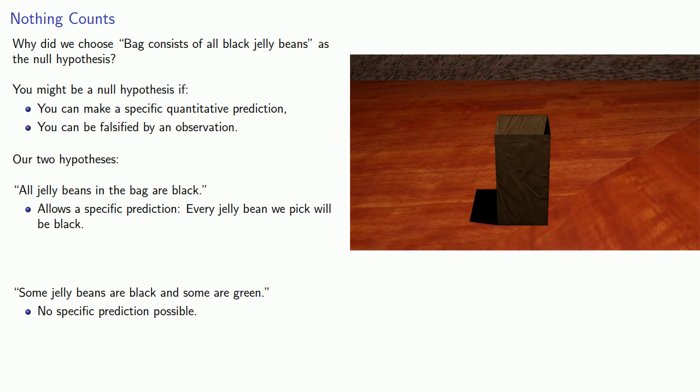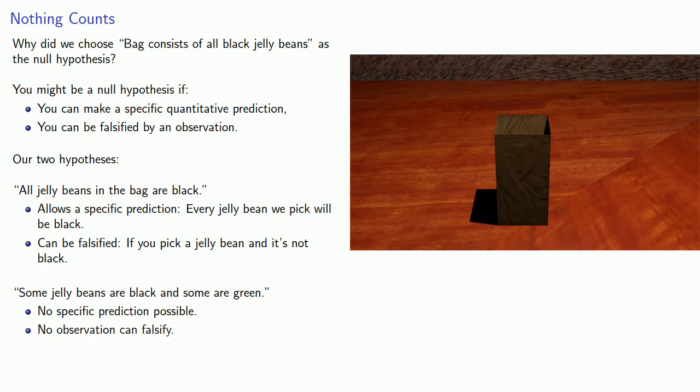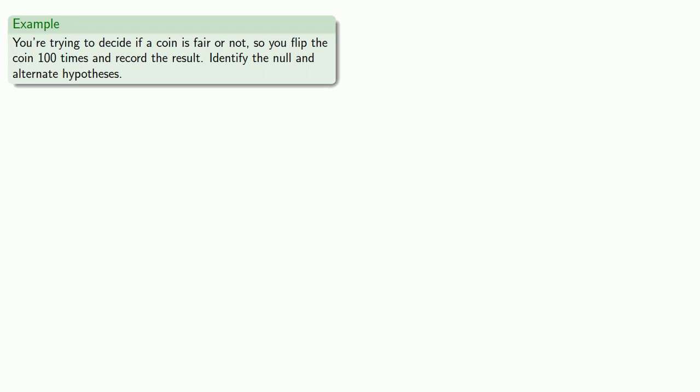The second important observation is that the hypothesis 'all jelly beans in the bag are black' can be falsified. If we pick out a jelly bean and it's not black, we know this is false. In contrast, the second hypothesis — some jelly beans are black and some are green — no observation can falsify it; the next jelly bean we pick could be green. So, for example, if you're trying to decide whether a coin is fair or not, you flip the coin 100 times and record the result. Identify the null and alternate hypotheses.